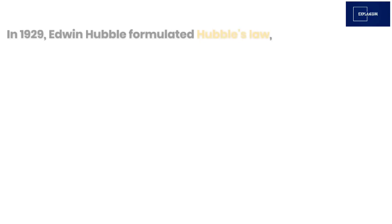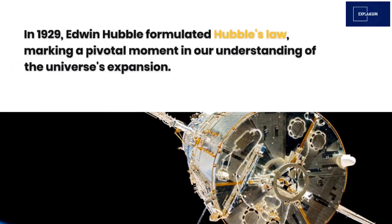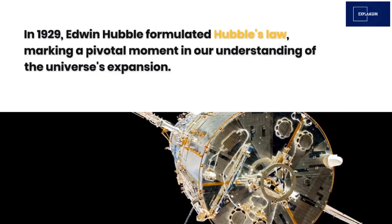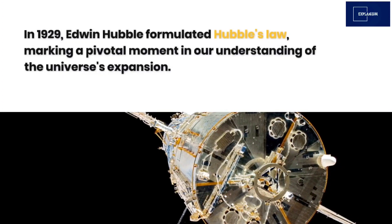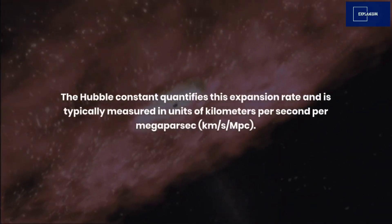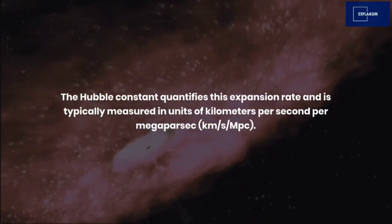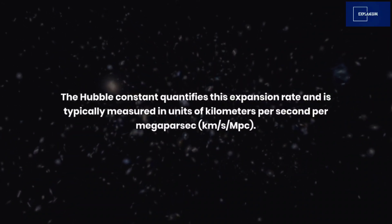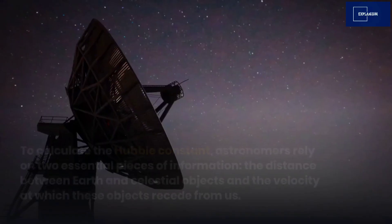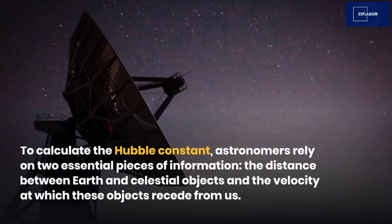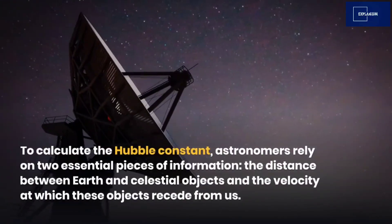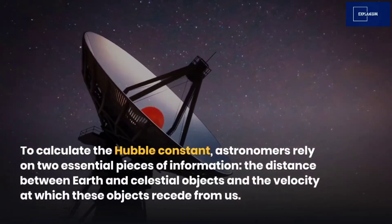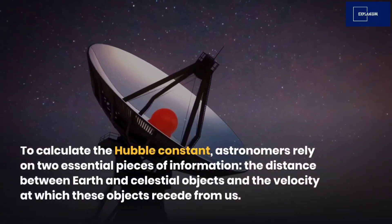What is the Hubble constant? In 1929, Edwin Hubble formulated Hubble's law, marking a pivotal moment in our understanding of the universe's expansion. The Hubble constant quantifies this expansion rate and is typically measured in units of kilometers per second per megaparsec (km/s/Mpc). To calculate the Hubble constant, astronomers rely on two essential pieces of information: the distance between Earth and celestial objects, and the velocity at which these objects recede from us.